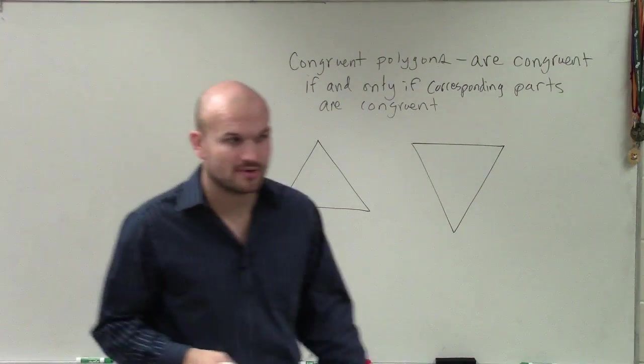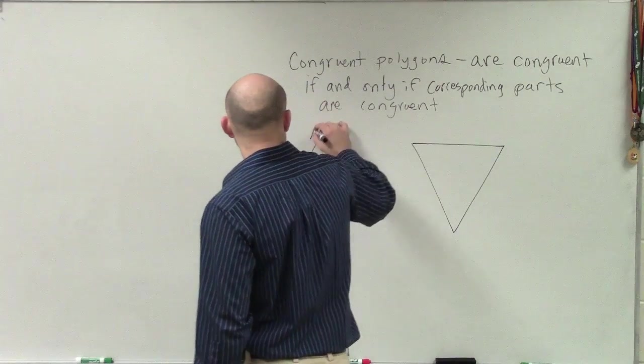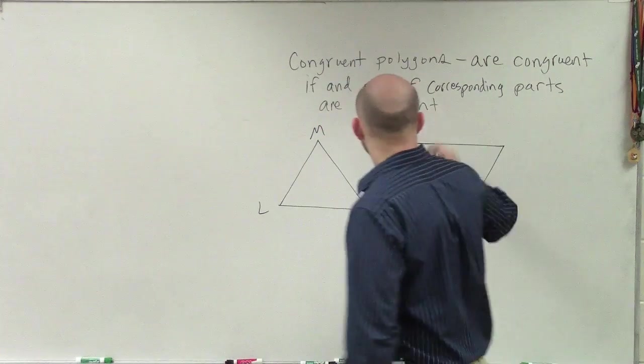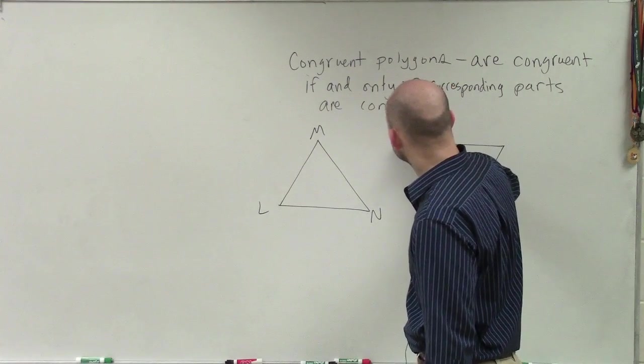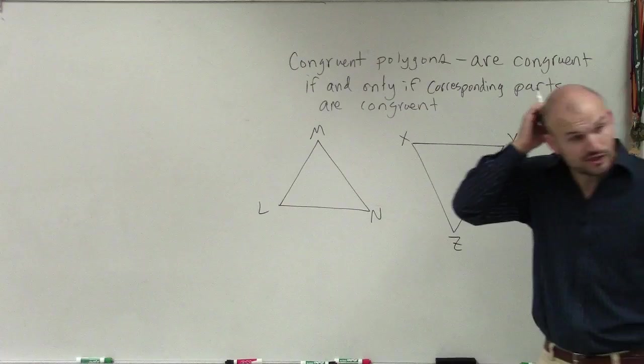So here's two triangles. Let's label these two triangles: L, M, N, and X, Y, Z. All right, so here's two triangles.